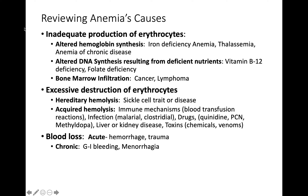To review the causes of anemia, there are three main reasons: inadequate production of erythrocytes, excessive destruction of erythrocytes, and blood loss. Inadequate production includes altered hemoglobin synthesis — iron deficiency anemia, thalassemia, anemia of chronic disease — and altered DNA synthesis from deficient nutrients like vitamin B12 and folate, as well as bone marrow infiltration from cancers and lymphoma.